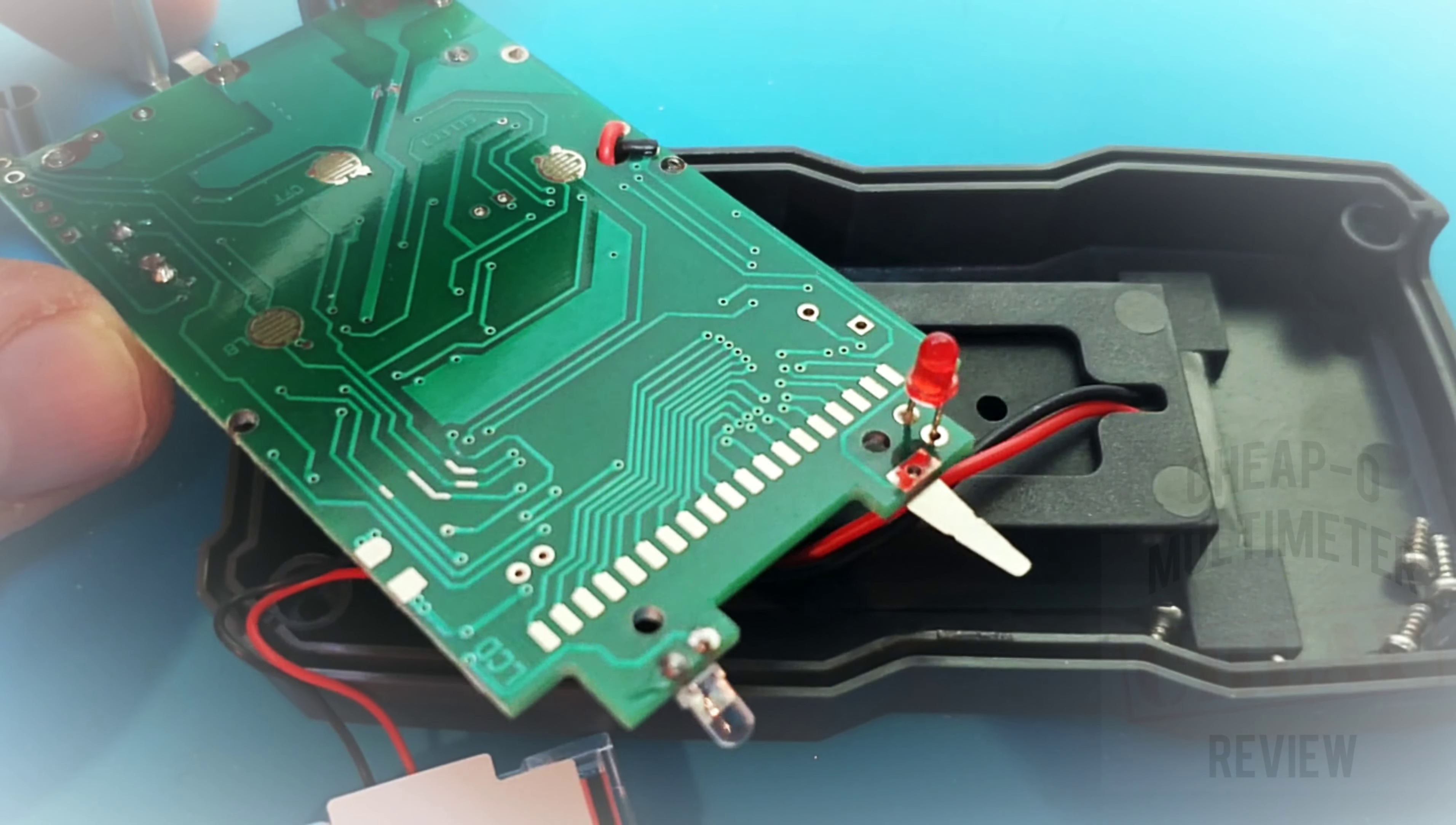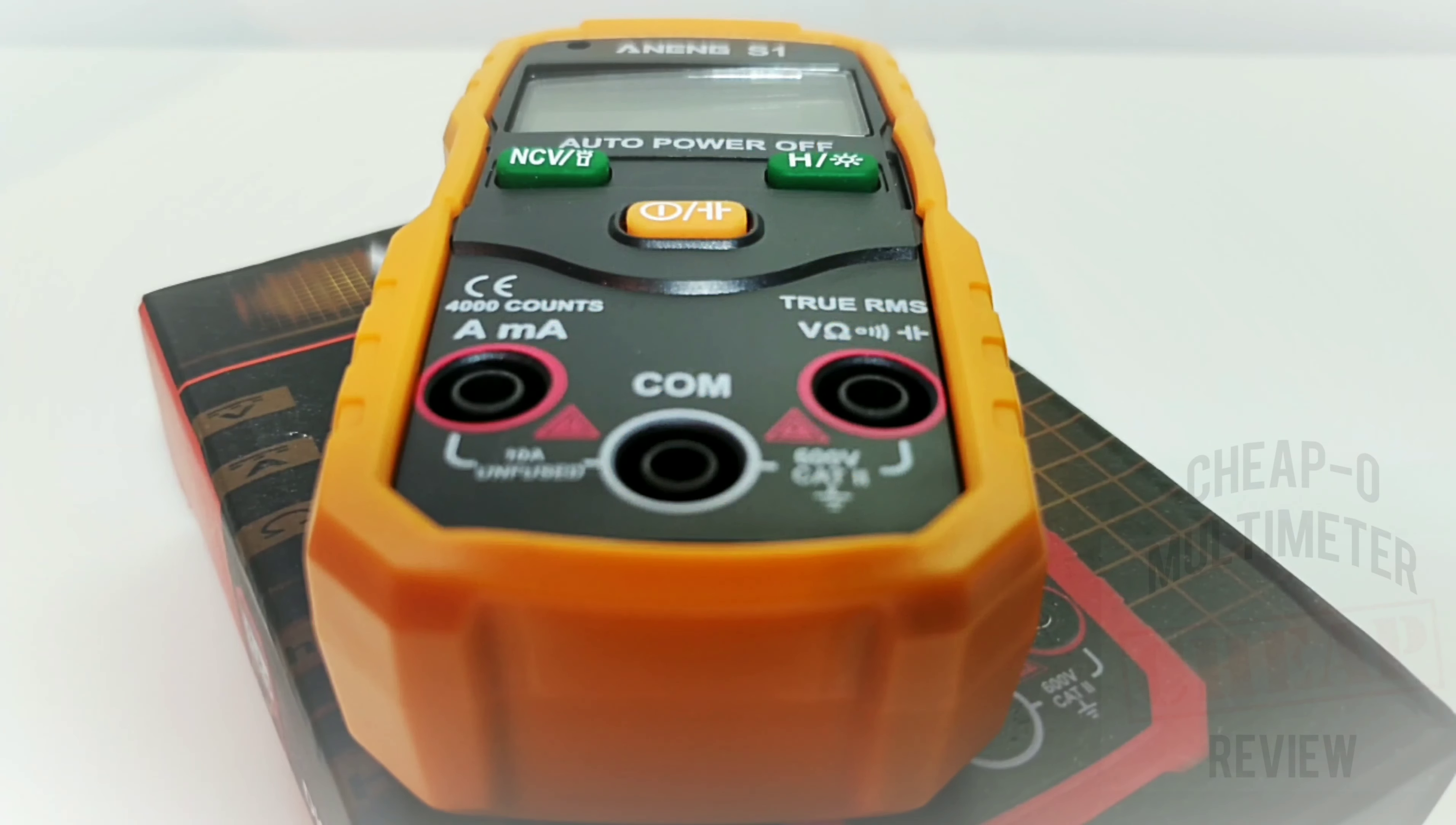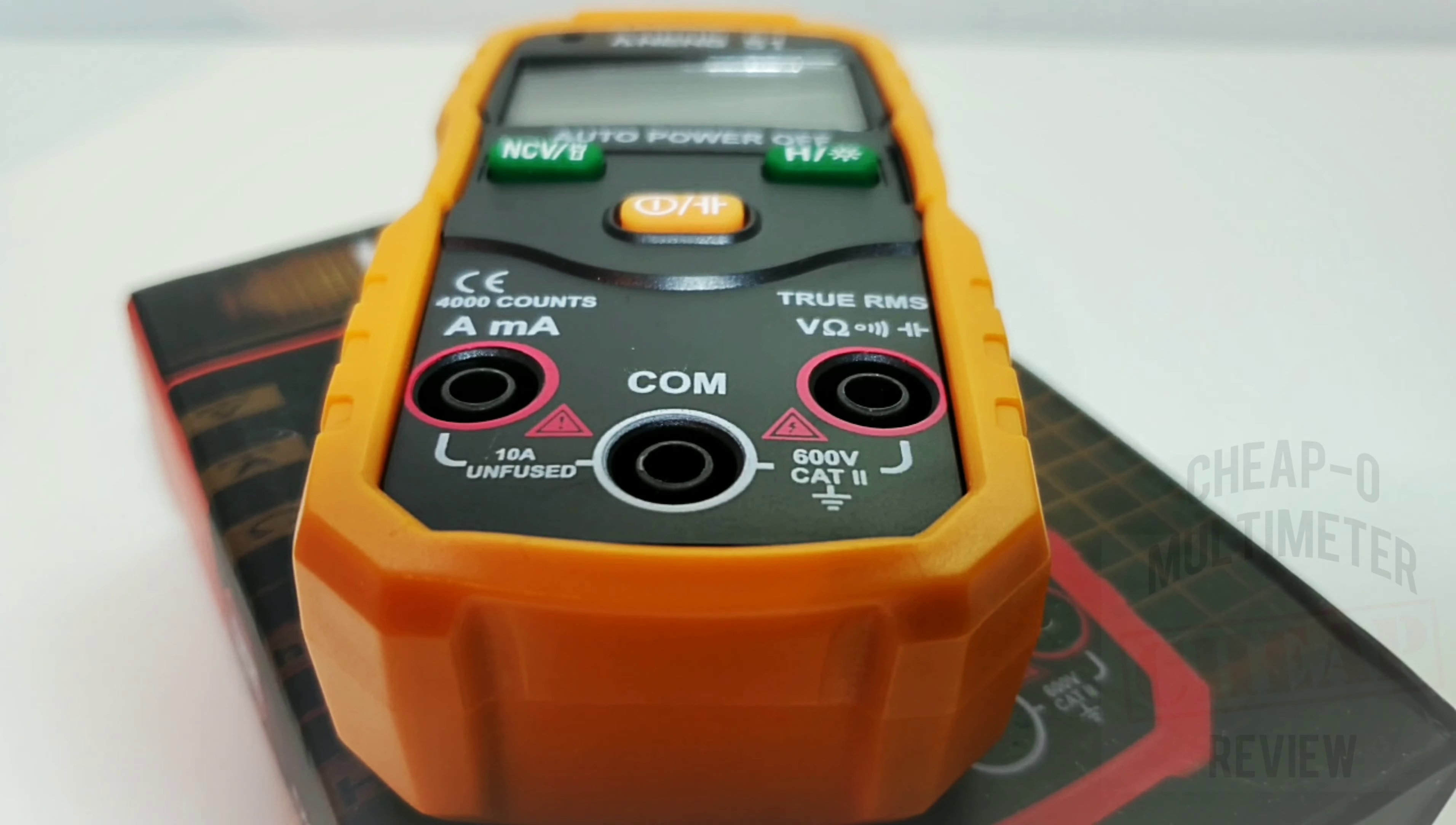Okay, coming back with my closing thoughts on the ANENG S1. Oh boy, you know I wanted to like this guy, I really did. And I kind of do, but I kind of don't either. Build quality though is really lacking. It just feels cheap. And you know what, yeah, it's not an expensive meter. We're talking 15, 16 bucks Canadian, around 12, 13 US, so it is not a lot of dinero. But even so, I just wish it had a little bit better quality.